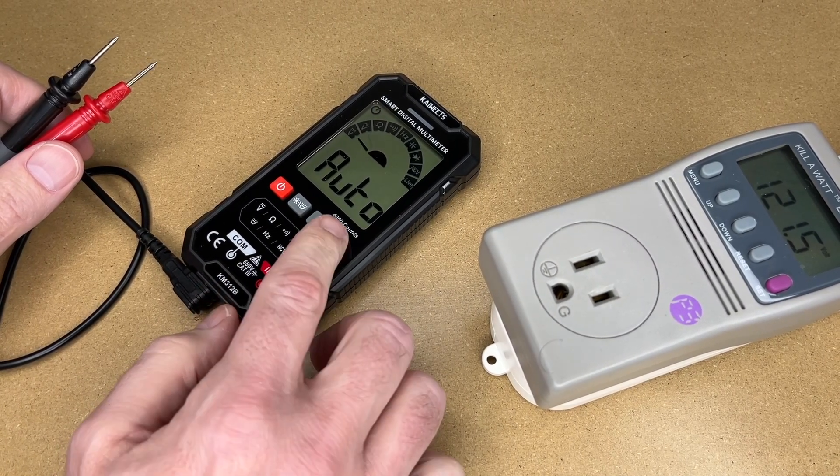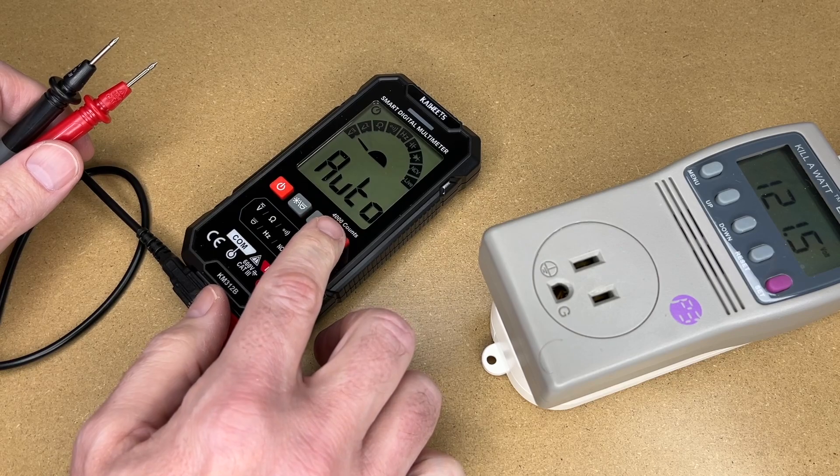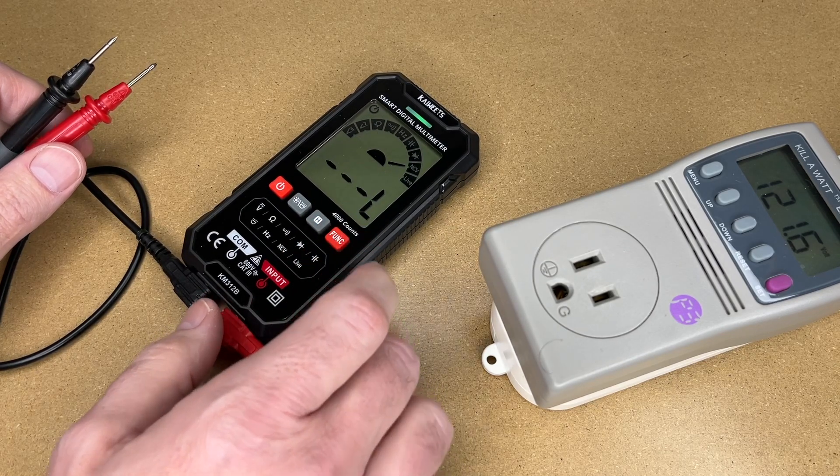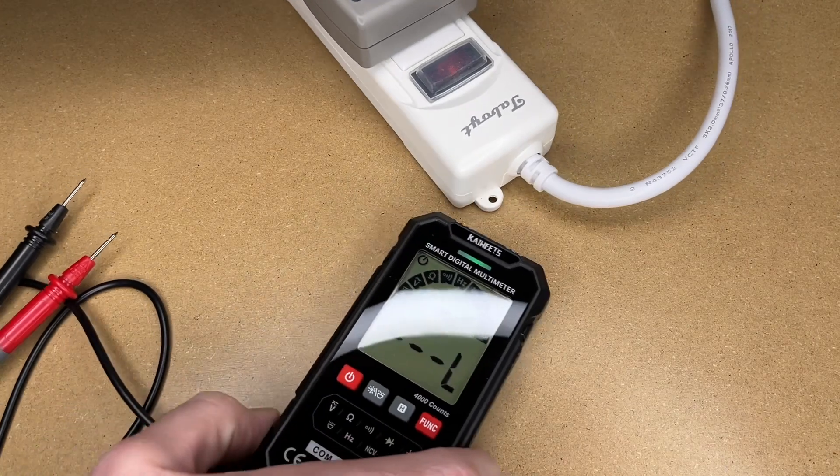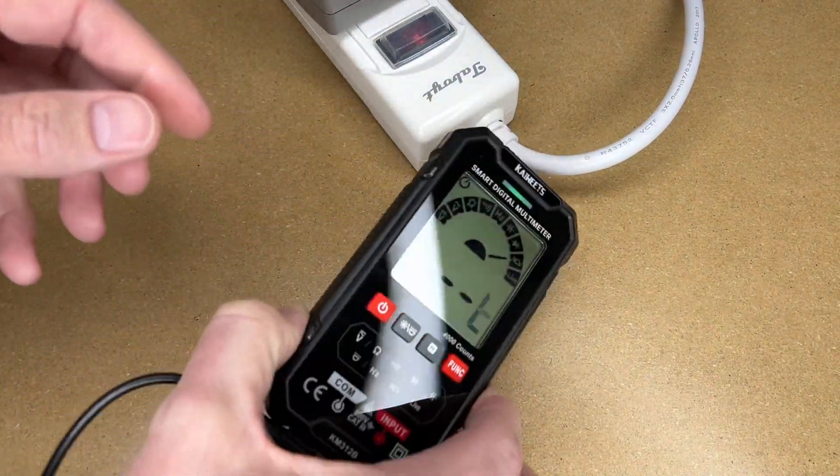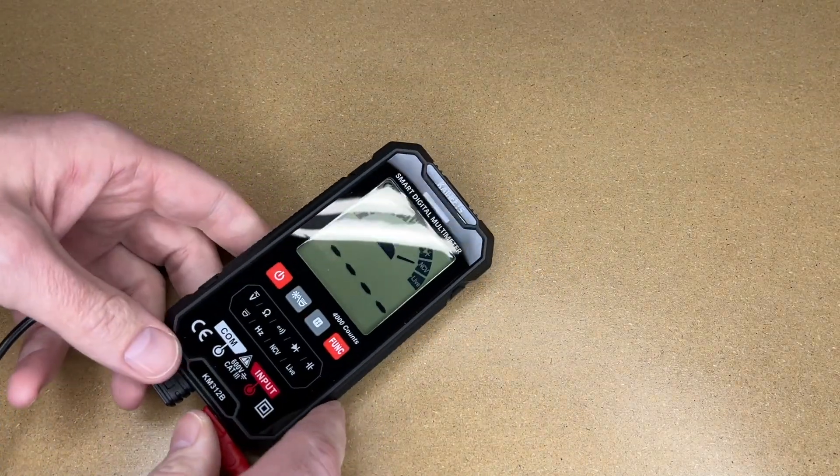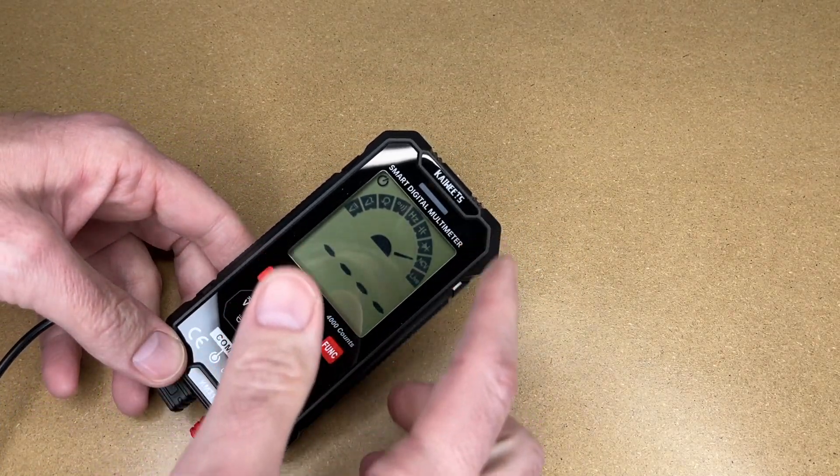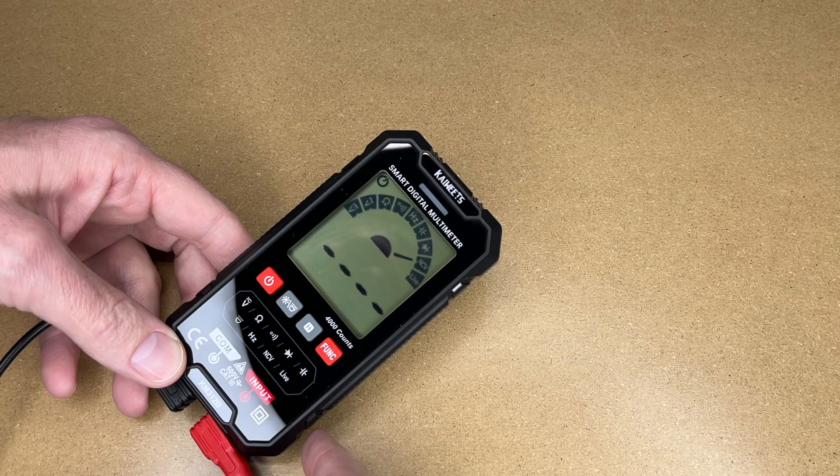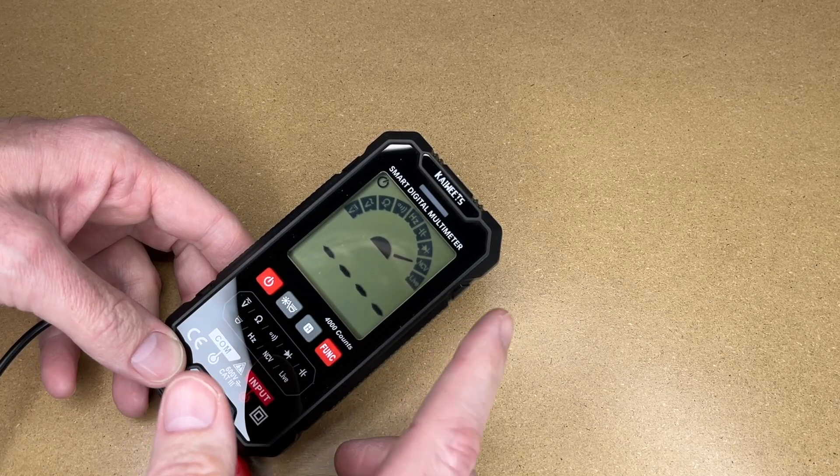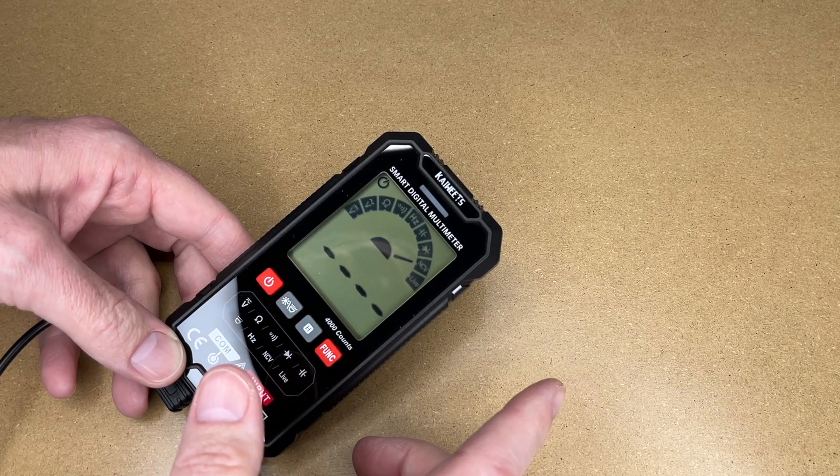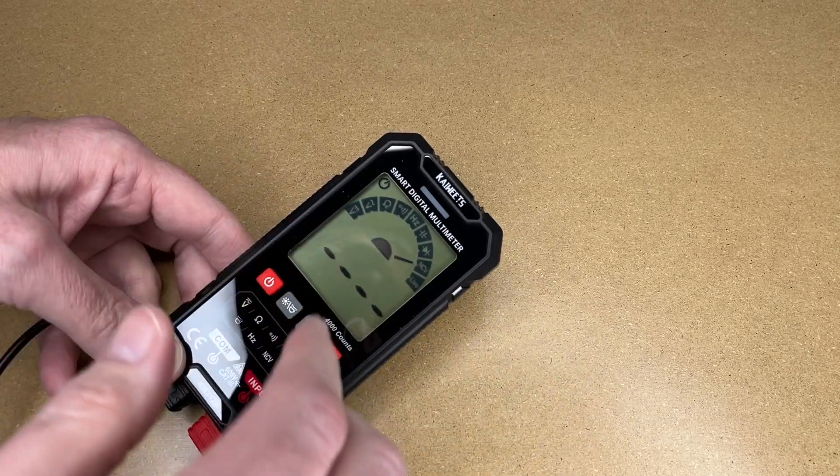Next, let's go to non-contact voltage. If I go up to this AC line here, there's a detector—I'll hold that up against the wire and it says it's hot. That's really handy: after you turn off a circuit you can test with that to make sure there's no electricity. With a non-contact voltage detector you typically want to test it with a known good power source to make sure it's actually triggered, then test the wire you're trying to test.